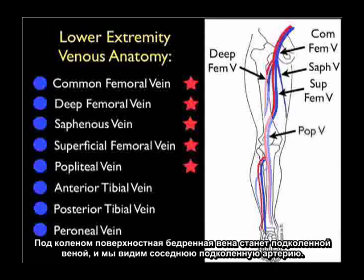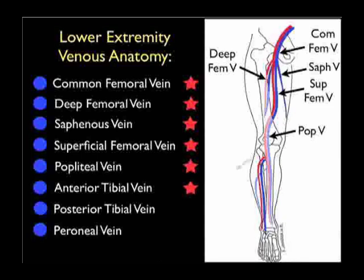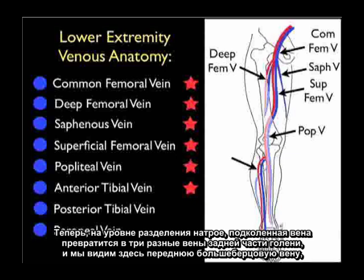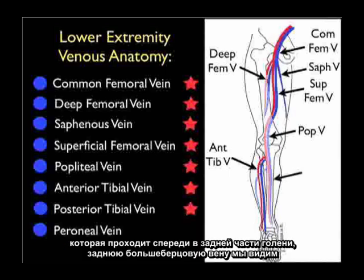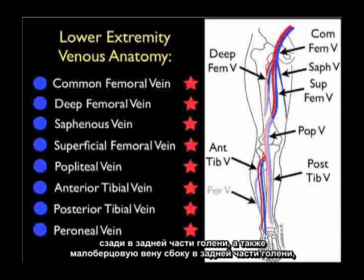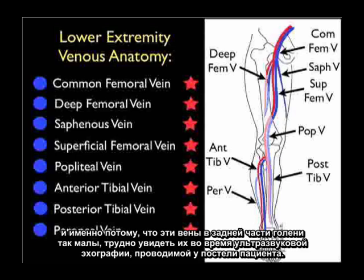Behind the knee, that superficial femoral vein will become the popliteal vein, seen adjacent to the popliteal artery. At the level of trifurcation, the popliteal vein will become three different calf veins: the anterior tibial vein coursing anteriorly, the posterior tibial vein seen posteriorly, and the perineal vein to the lateral aspect of the calf. These calf veins are so small that it's difficult to see them on bedside ultrasonography.